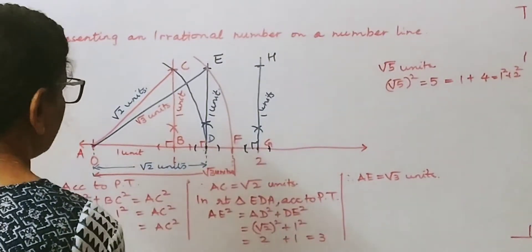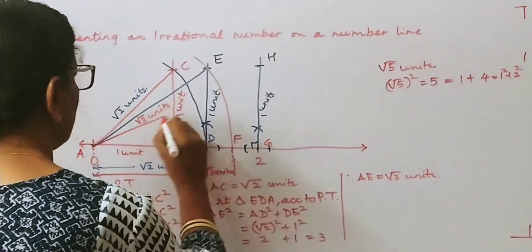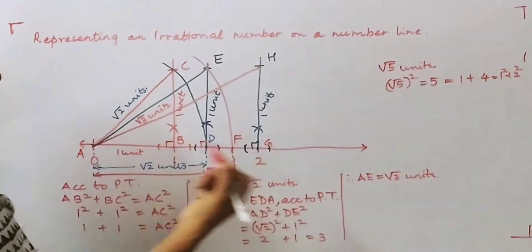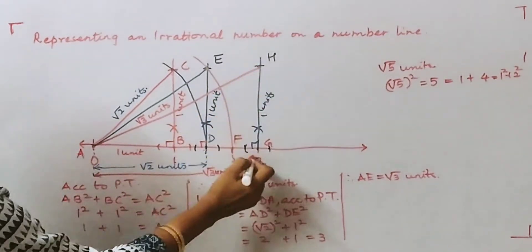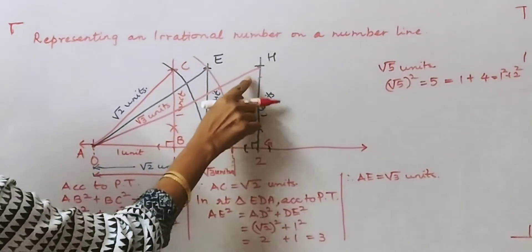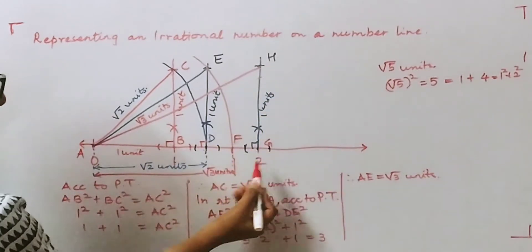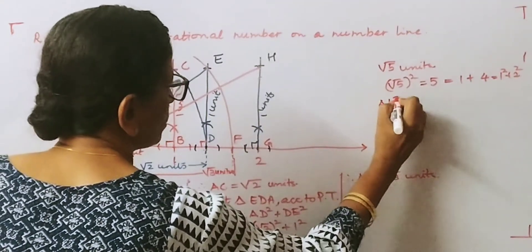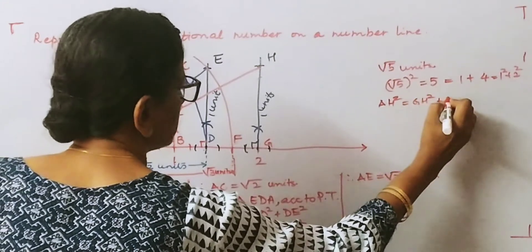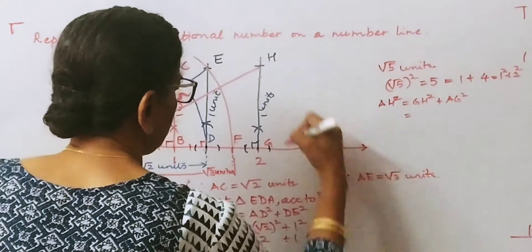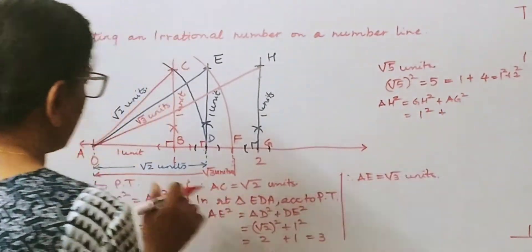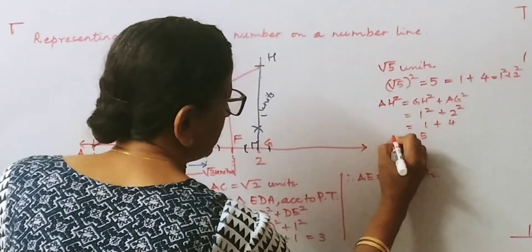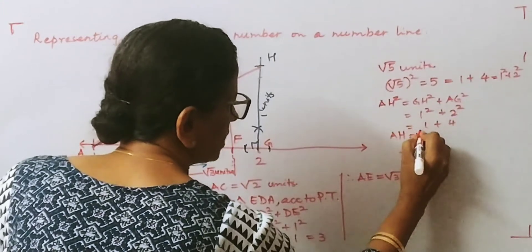From A we join to H. In right triangle AGH, AH is the hypotenuse. So AH² = GH² + AG². GH is one unit, so GH² = 1² = 1. AG from A to the point 2 on the number line is two units, so AG² = 2² = 4. Therefore AH² = 1 + 4 = 5, and AH = √5 units.